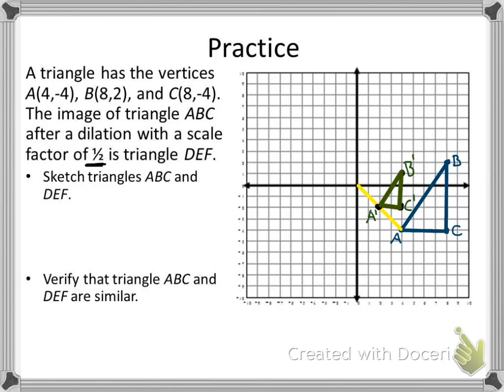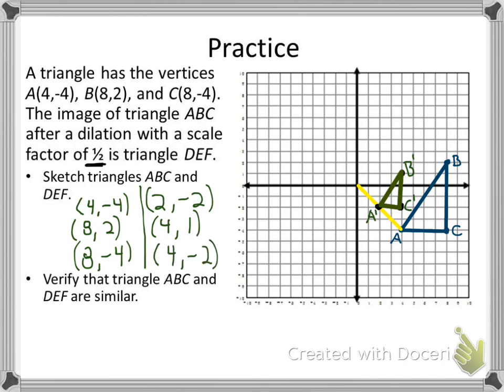We can also apply our scale factor, which is just 1/2. If we started with our points (4, -4), (8, 2), and (8, -4), we apply our scale factor and get (2, -2), (4, 1), and (4, -2). Let's check. Are they the same? (2, -2) is A', (4, 1) is B', and (4, -2) is C'. So it does, in fact, work out. That's another way you could do it as well.